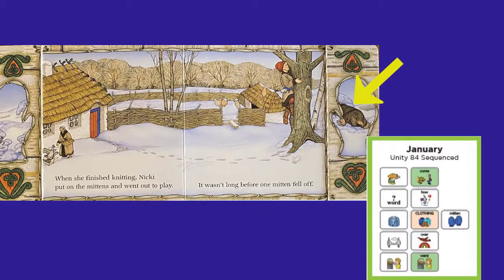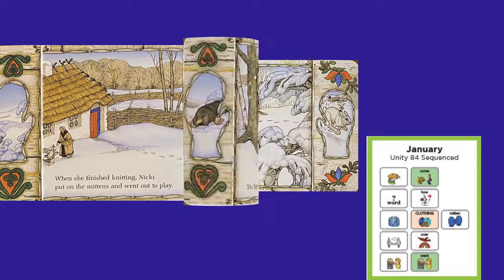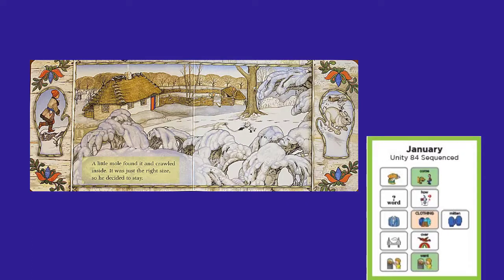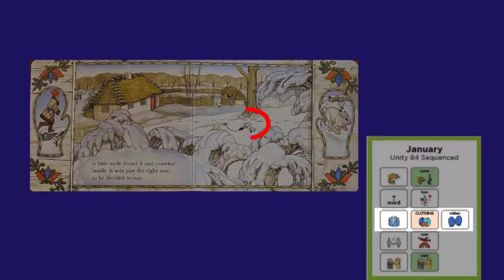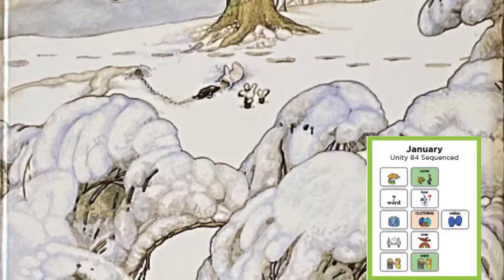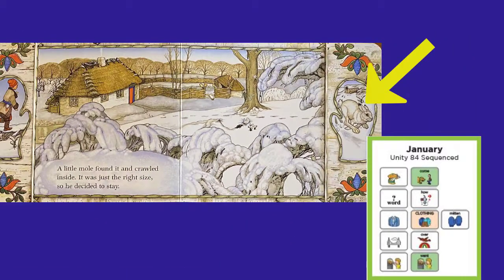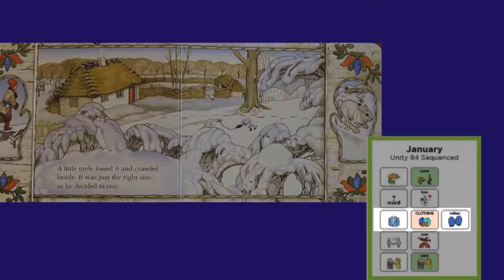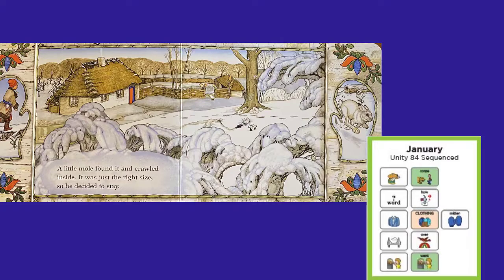Here's a clue about what's going to happen next. A little mole found it and crawled inside — it was just the right size, so he decided to stay. I see the mitten, but it's hard to see the little animal that crawled in there. It looks like the rabbit wants to come into the mitten too. I wonder why he wants to come in the mitten.